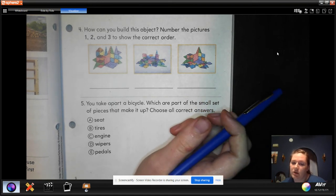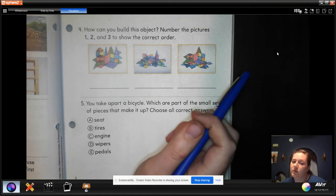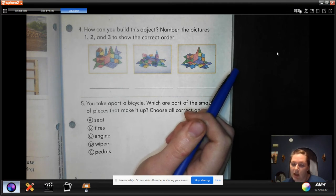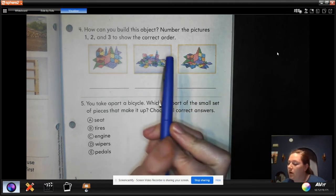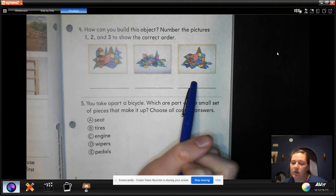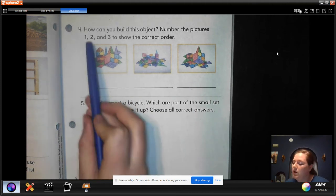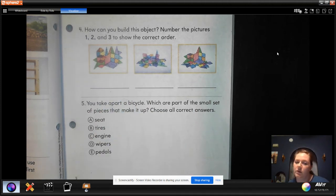So if they wanted to build an object, what would be the first step and the second step and the third step? So you'll put a one, two, or three underneath the picture. Whichever one's first, put a one, two for second, and three for third.